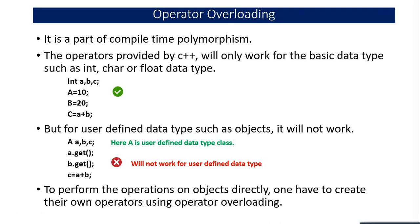One example of operator overloading: for integers, 10 plus 20 produces 30. But for strings, placing "United" plus "States" produces "United States" because the compiler knows string addition means concatenation. If treated as strings, 10 plus 20 would produce "1020". So the compiler automatically performs overloading in the background based on data type — for integers it produces a numeric sum, for strings it concatenates. We'll focus on user-defined data types like class objects and how to add values inside them.